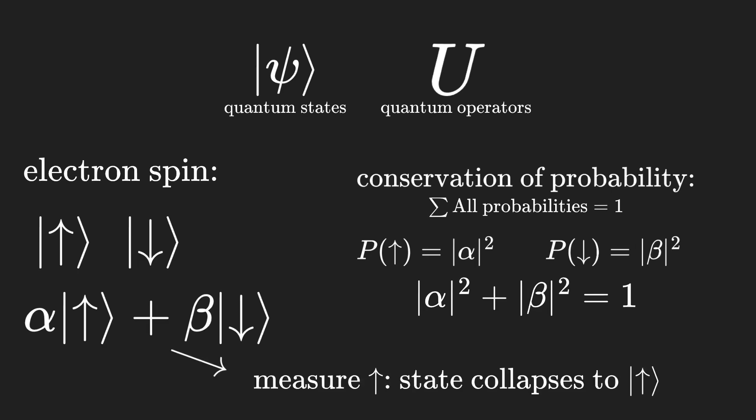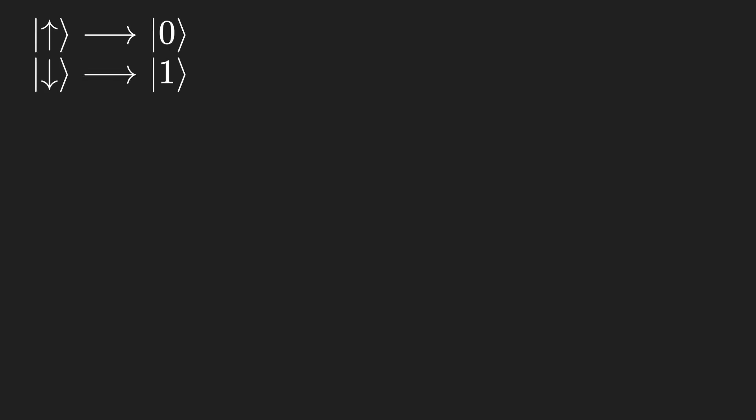After a measurement, the state collapses into the measured direction. For example, if we measure the spin-up, the quantum state will collapse into the up state after the measurement. Now let's use a different name for the base options and name them 0 and 1. This is known as a qubit — similar to a bit, but with additional cool quantum properties we can exploit.